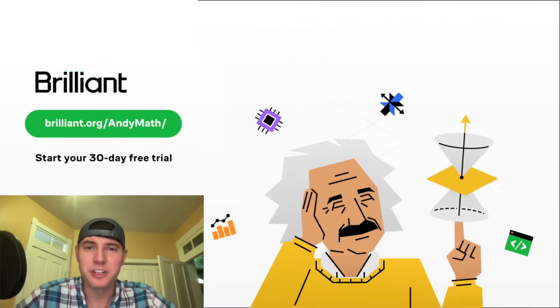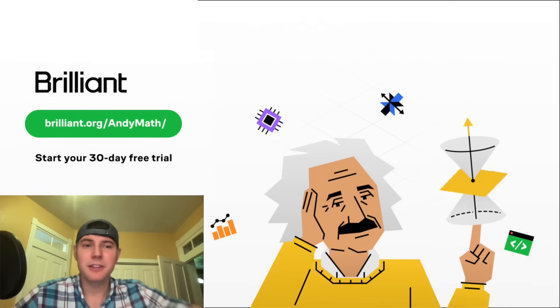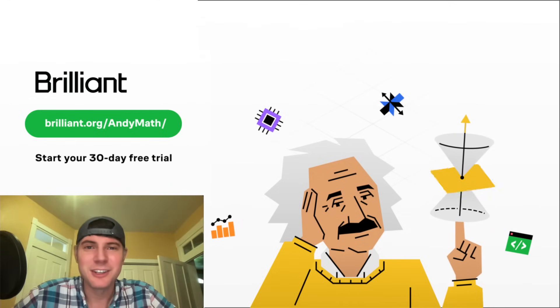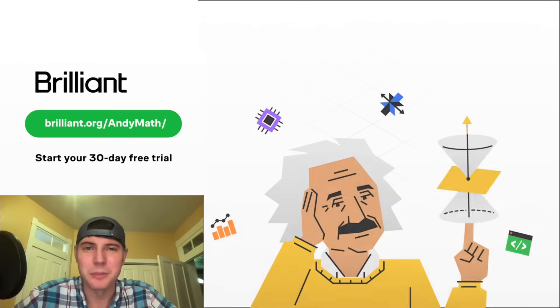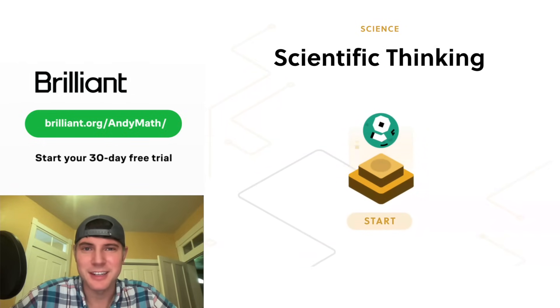so if you want to go through it yourself, Brilliant currently has a free 30-day trial. Visit brilliant.org slash andymath or check out the link in the description. You can also get 20% off an annual premium plan. If you wanted to go through this one, the name of the course is Scientific Thinking. How exciting.